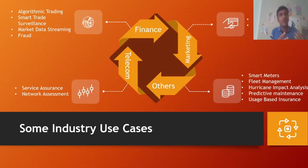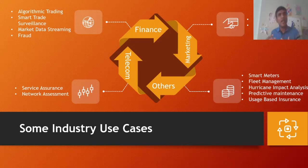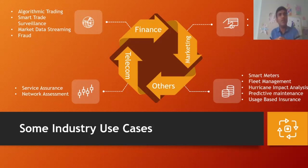Other industry use cases include smart meters, where energy and utility companies continuously collect household power consumption data, managing excess power and selling it at a higher premium to industry when consumption is low. Hurricane impact analysis uses real-time analytics to assess damage, identify which counties or cities need evacuation, and direct immediate help after a storm. Usage-based insurance is another prominent case in the insurance sector, where car insurance premiums are determined based on how a customer actually drives or uses their car.